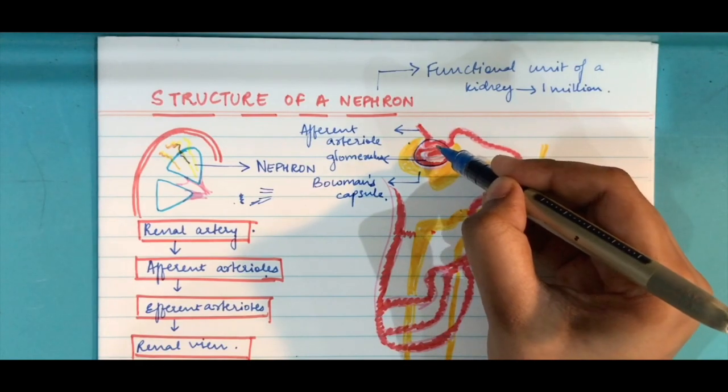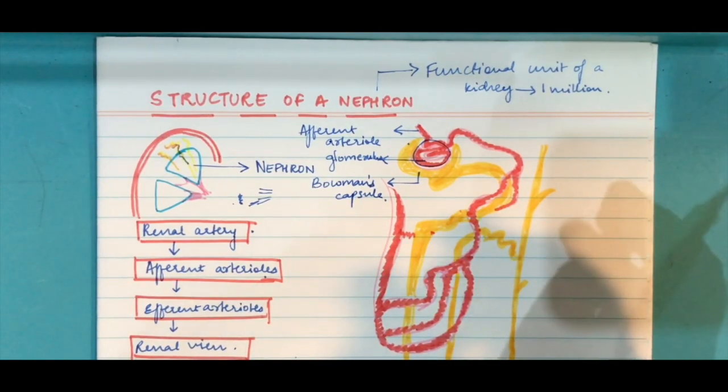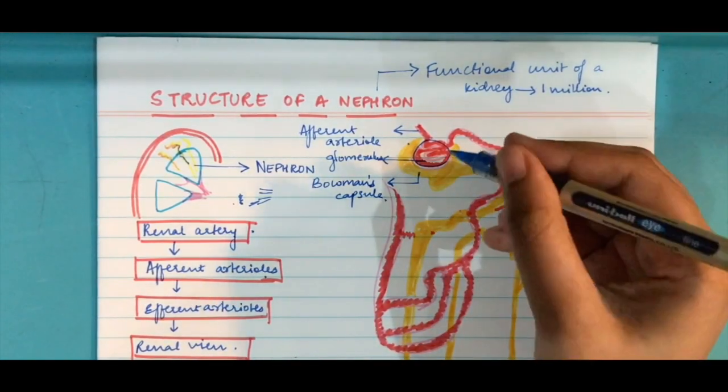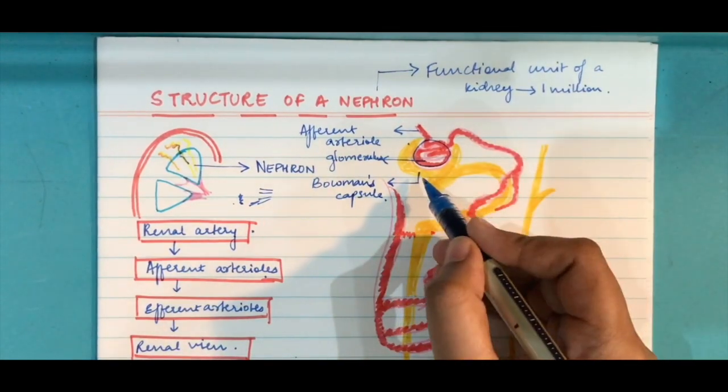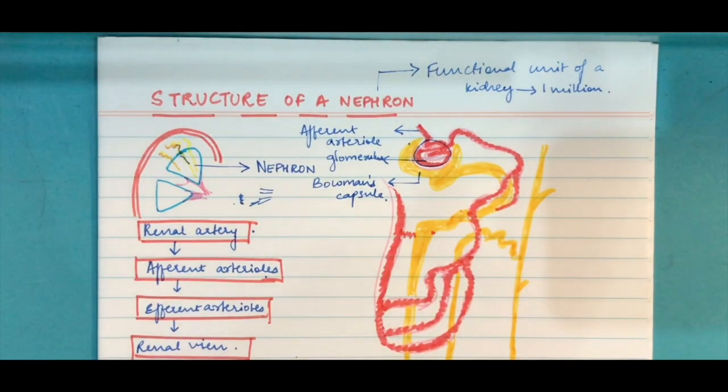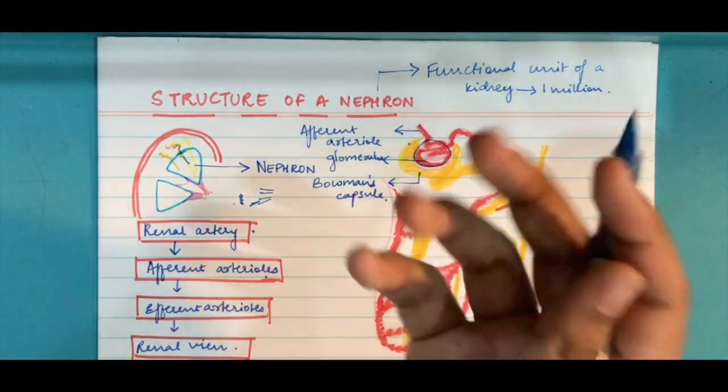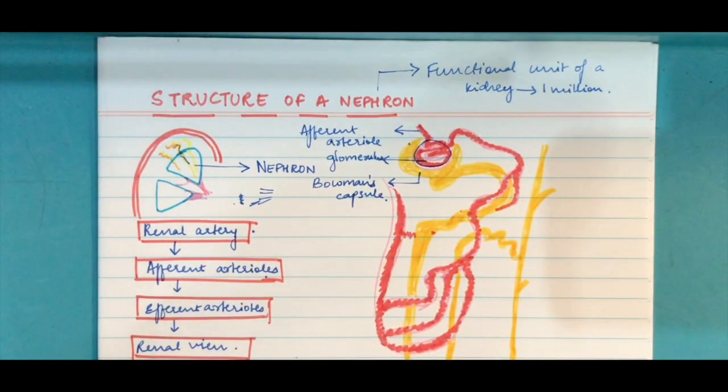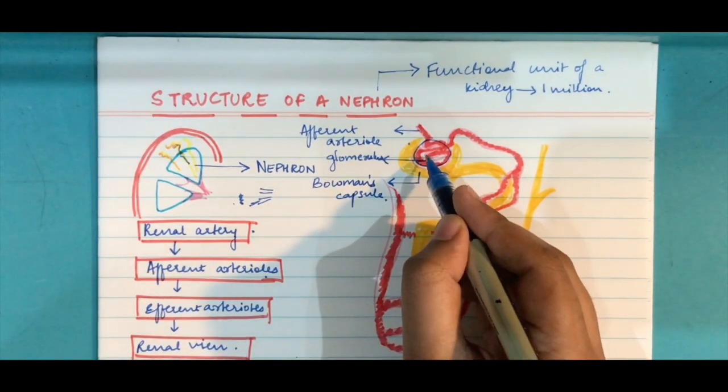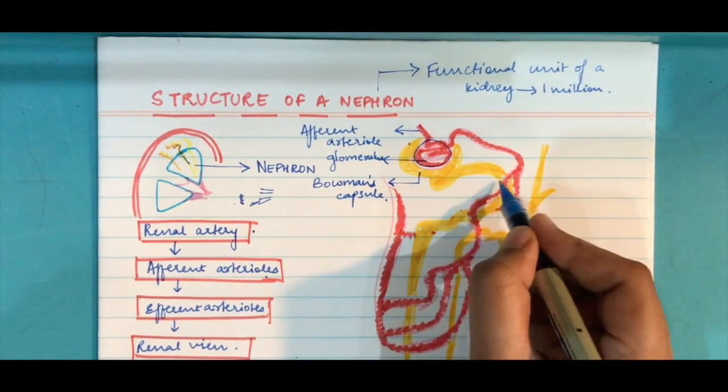Now how does this glomerulus function? Blood comes from here and everything in the blood except for the proteins and a bit of plasma is sent - all the waste material is sent into the Bowman's capsule by filtration. Bowman's capsule also undergoes another filtration known as ultrafiltration. These are all the capillaries which form a tuft and everything gets filtered out and moves to the Bowman's capsule.